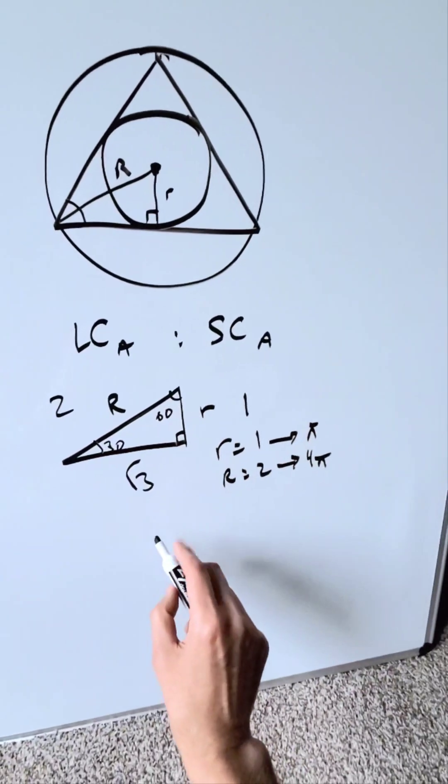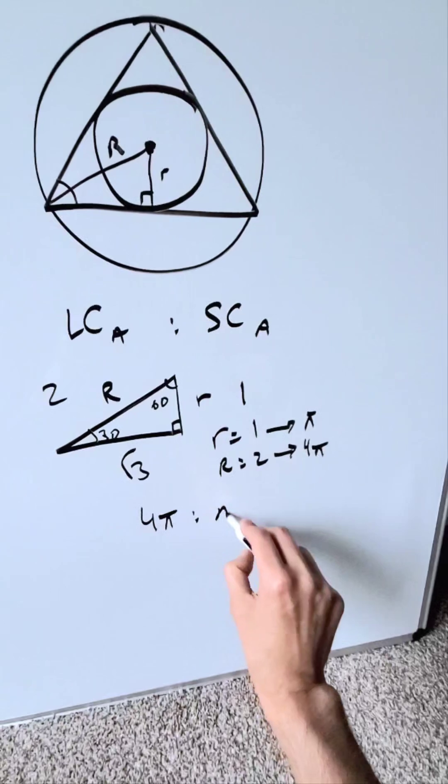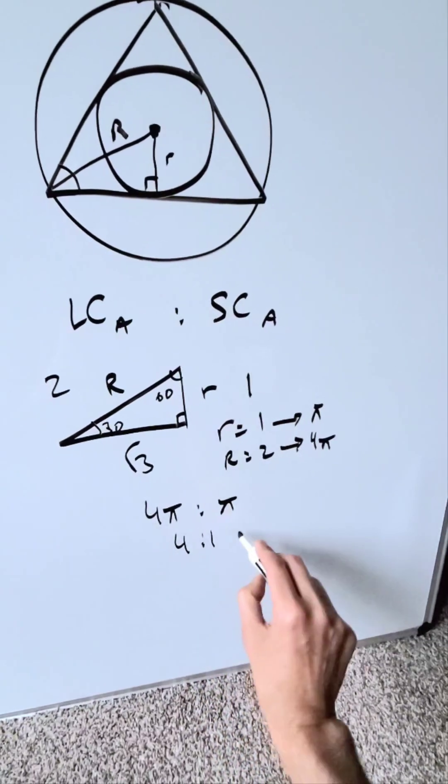What is the ratio of the two areas, the large to the small? It's a 4 pi to a pi or merely 4 to 1 and we are done.